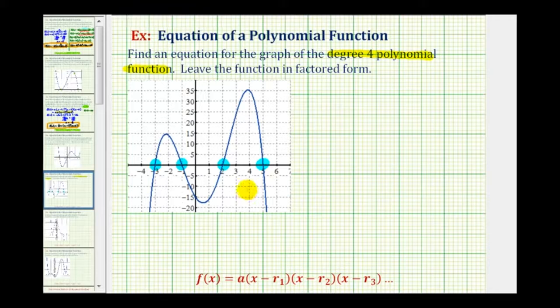Because we know the roots or zeros of our function, we can write the polynomial function in factored form using this form here, where a is a constant and r sub one, r sub two, r sub three, and so on are the roots or zeros of the function. But we're also going to have to find one more point on the function to determine the value of a.